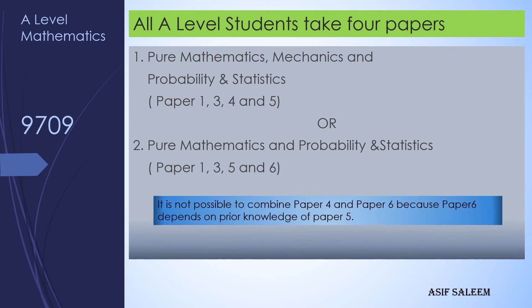Paper 6 is S2, which is the higher level of Statistics. You cannot take Paper 6 if you have not studied Paper 5. If you have chosen Paper 4 (Mechanics), you cannot take Paper 6 along with it. To study S2, you must choose Paper 5. In summary, there is no combination of Papers 1, 3, 4, and 6.